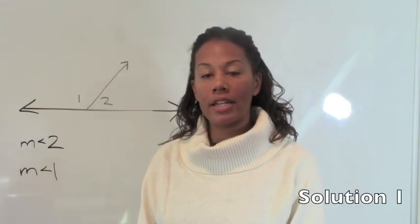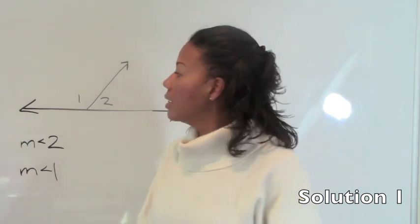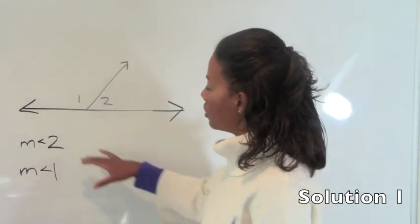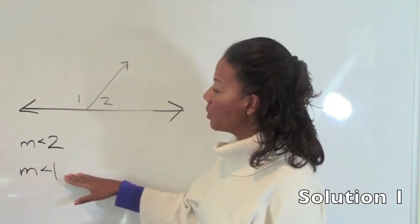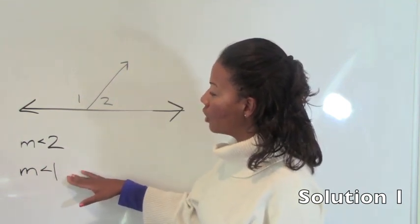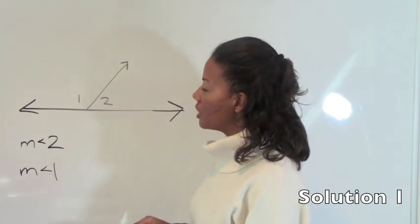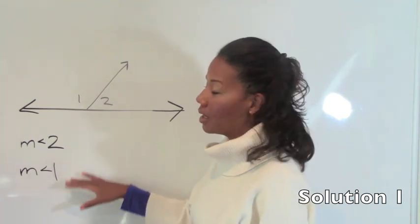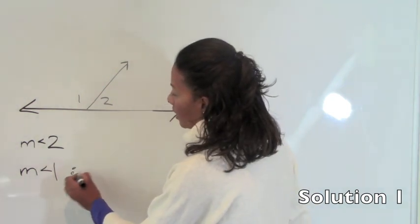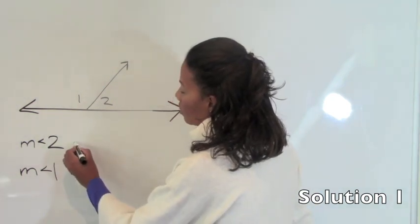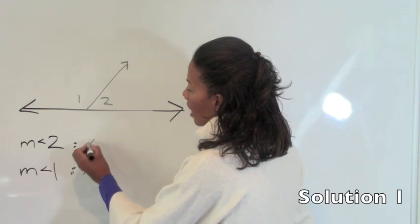Now we're going to jump right in to number 1. Number 1 tells us that the measure of angle 2 is 40 degrees less than the measure of angle 1, and then we were asked to find the measure of angle 1. So the measure of angle 2 is based on the measure of angle 1. So we can make the measure of angle 1 x and the measure of angle 2 is simply x minus 40.